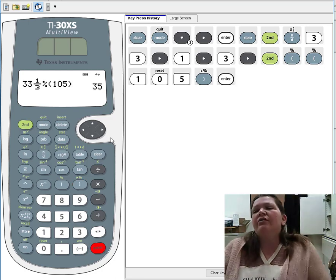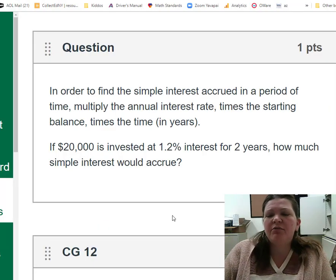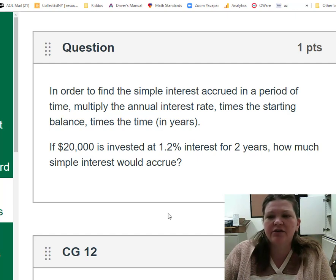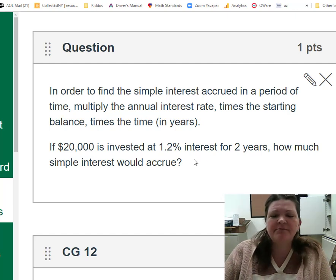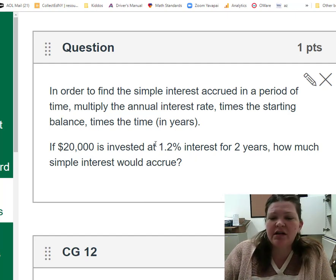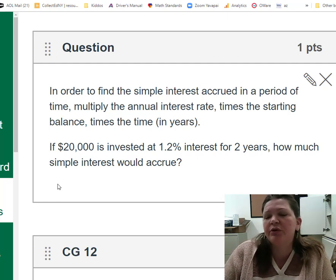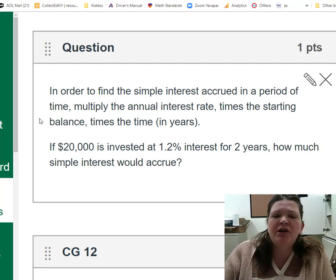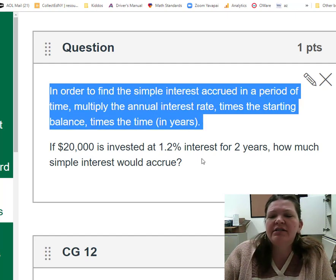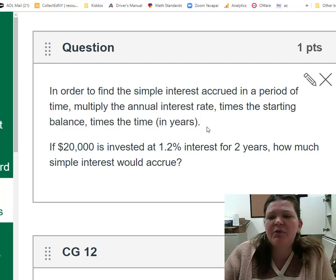Okay, my next problem looks like a word problem but don't worry, it's not really. It's from a little calculator quiz I have, but let's take a look. It says in order to find the simple interest accrued in a period of time, multiply the annual interest rate times the starting balance times the time in years. And then I see that I've invested $20,000 at 1.2% interest for two years, and we want to know how much simple interest would accrue. You don't have to know anything—this is from the GED formula sheet by the way—but you don't even need the formula sheet because I just told you what to do. I just said if you want to find that simple interest, multiply those three numbers.